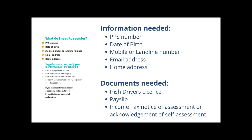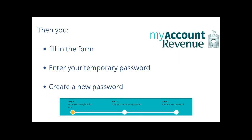The information you need to register includes your PPS number, your date of birth, mobile or landline number, email address, and home address. To set up your account as quickly as possible, you need to provide two documents, which can include an Irish driver's licence, a payslip, and an income tax notice of assessment or acknowledgement of self-assessment. Don't worry if you can't get instant access — Revenue will send you a password by post. Then you fill in the form and Revenue will send you your temporary password by email or post.